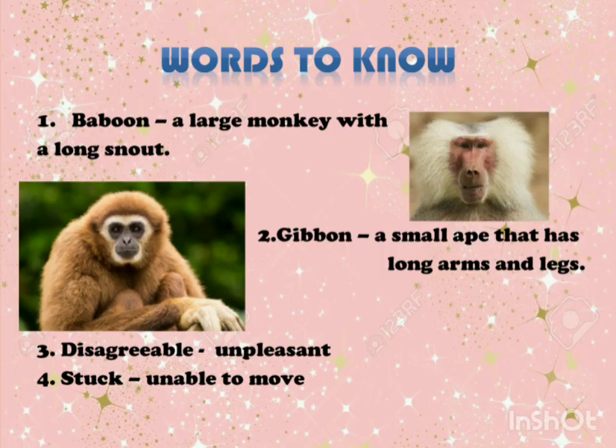The first word is Baboon. How will you pronounce it? Baboon. A large monkey with a long snout. Snout means it has a long nose, jaw and mouth. Can you see in the picture? So that is a baboon. The second word is Gibbon — a small ape that has long arms and legs. This Gibbon has no tail and it is larger than a monkey.